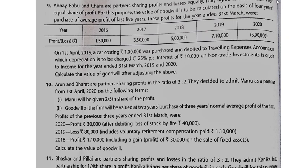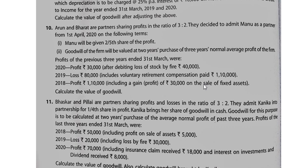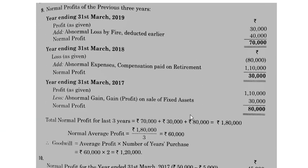For 2019 the second point: loss of 80,000 including voluntary retirement compensation paid of 1,10,000. Voluntary retirement is not a regular expense, so it is added back. Note: there is a serial number mismatch — Question 10 in the book corresponds to Question 9 in the solution. Also, there is a slight year difference: where one has year 17, the other shows 18; where one has 19, the other has 20.